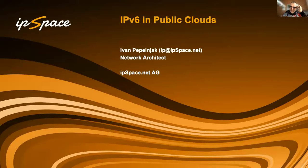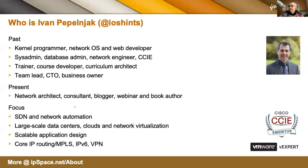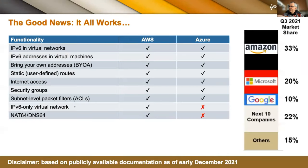I was asked to talk about IPv6 in public clouds, probably because I was stupid enough to talk about IPv6 10 years ago, and I'm still stupid enough to talk about public clouds. The table I put together has only two columns: AWS and Azure. That's because, according to some nice infographics, those two cover about 50% of the market. The third entrant killed so many services I used in production that I can't take them seriously anymore. So there will be no mention of Google Cloud apart from one slide at the very end.